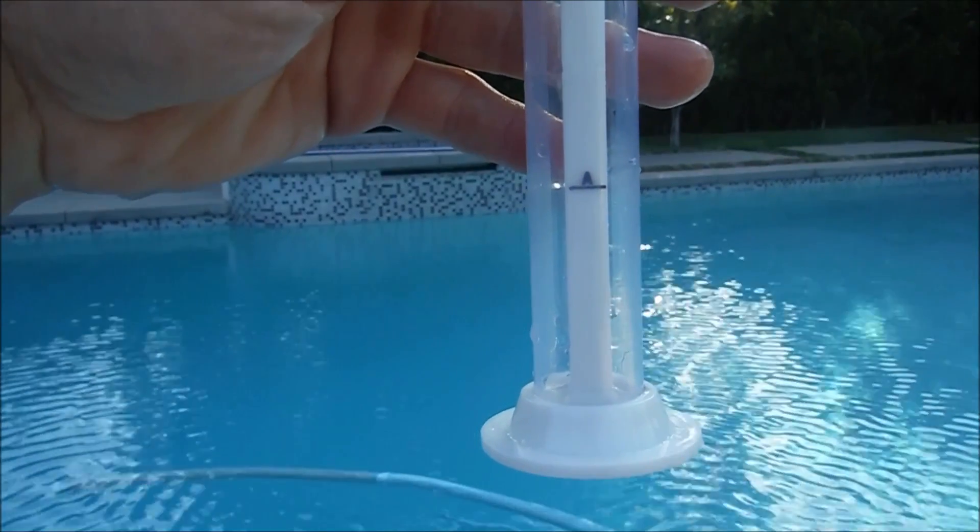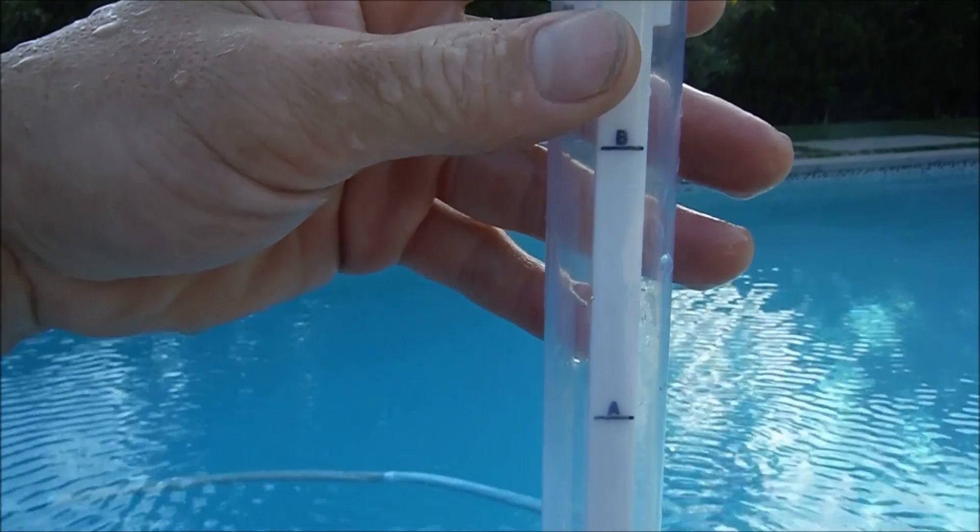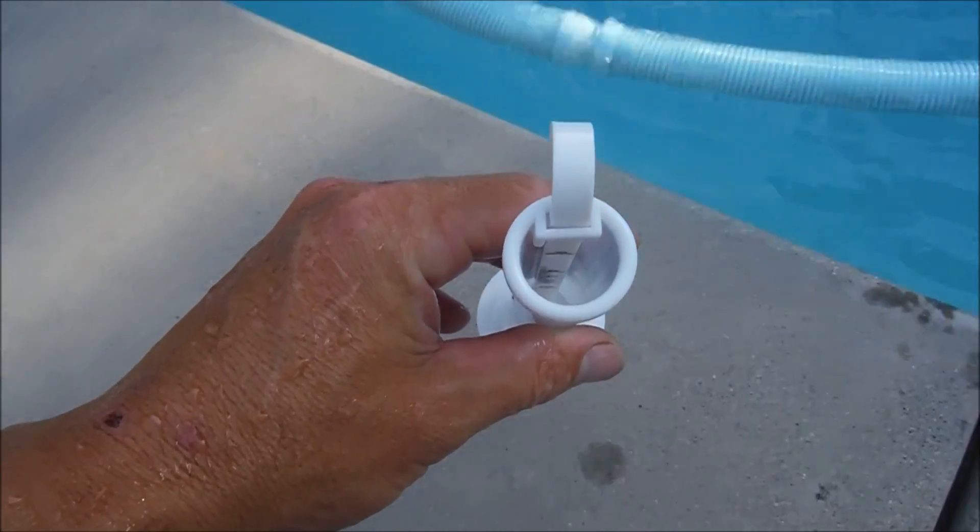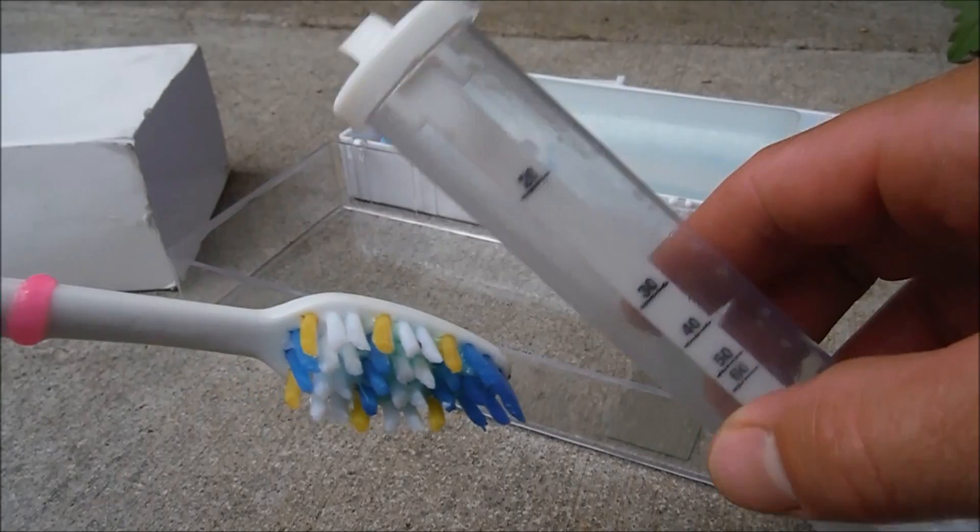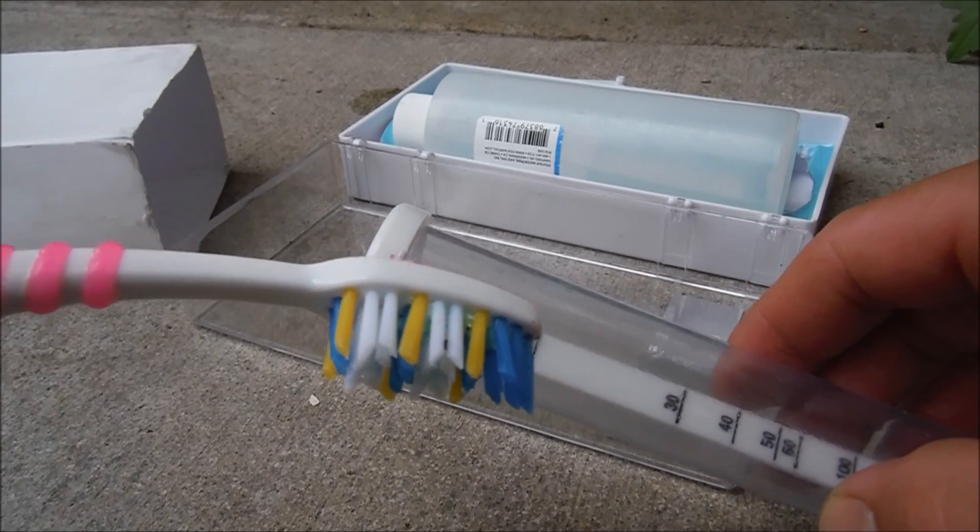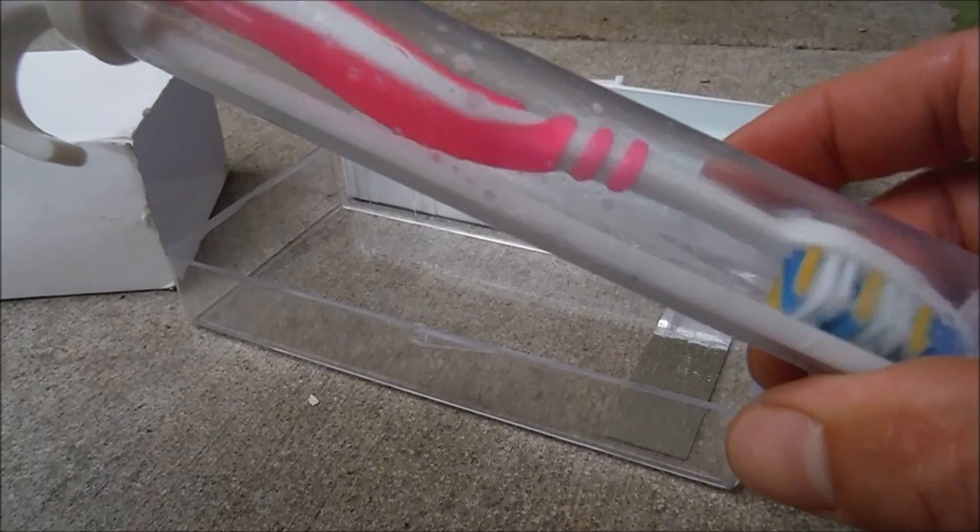We're going to fill up to line A with pool water and then up to line B with the test solution. Make sure you start with a clean tester and in between uses you want to make sure you clean the tube really good. You can use a toothbrush with some soap on it. Just get it in there and clean it really well.